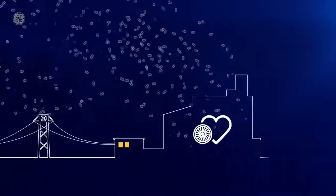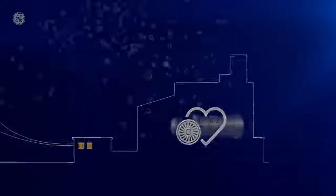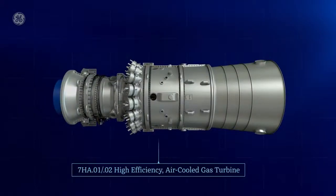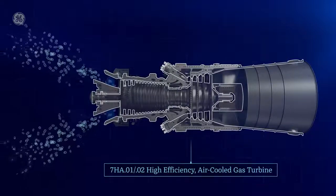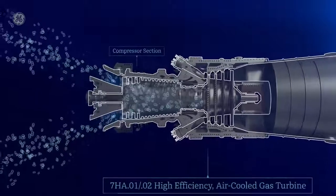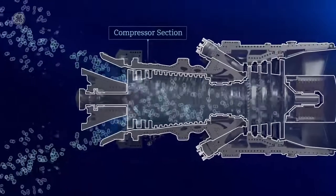The gas turbine is the very heart of the power plant. First, air is drawn in through one end of the turbine. In the compressor section of the turbine, all those air molecules are squeezed together.